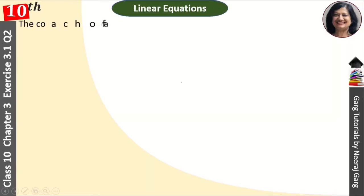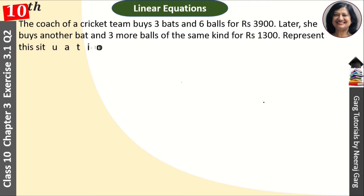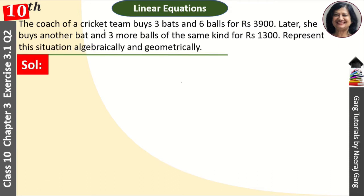Hi, this is Neeraz Gurk and you are watching Class 10th Chapter 3 Linear Equations, Exercise 3.1, Question Number 2. The coach of a cricket team buys 3 bats and 6 balls for rupees 3900. Later she buys another bat and 3 more balls of the same kind for rupees 1300. We have to represent this situation algebraically and geometrically.